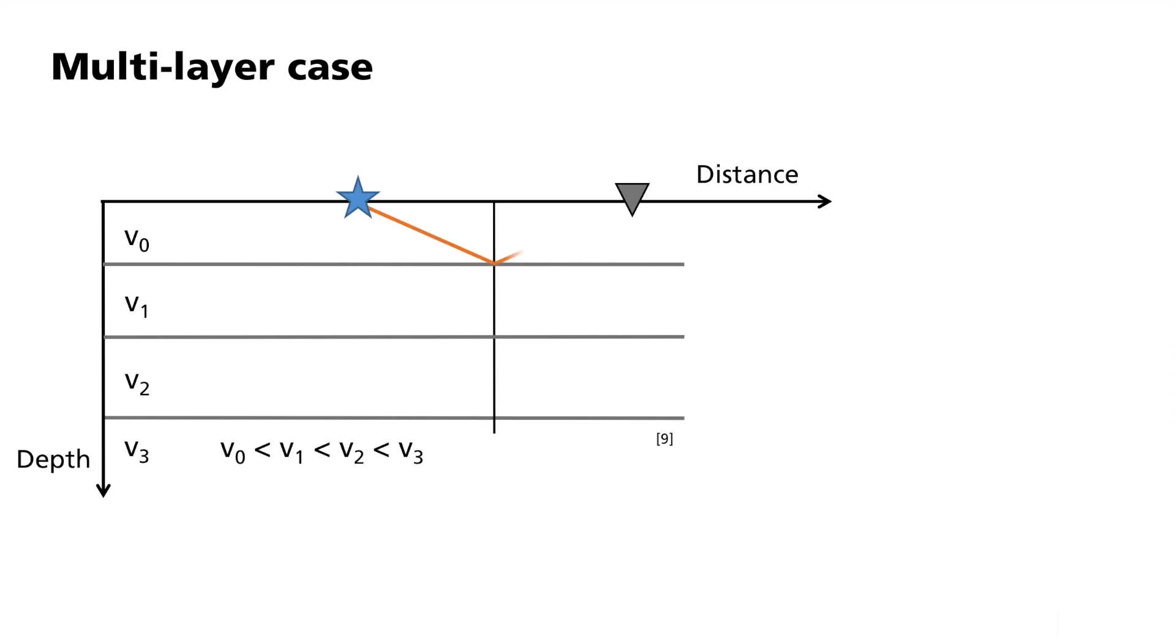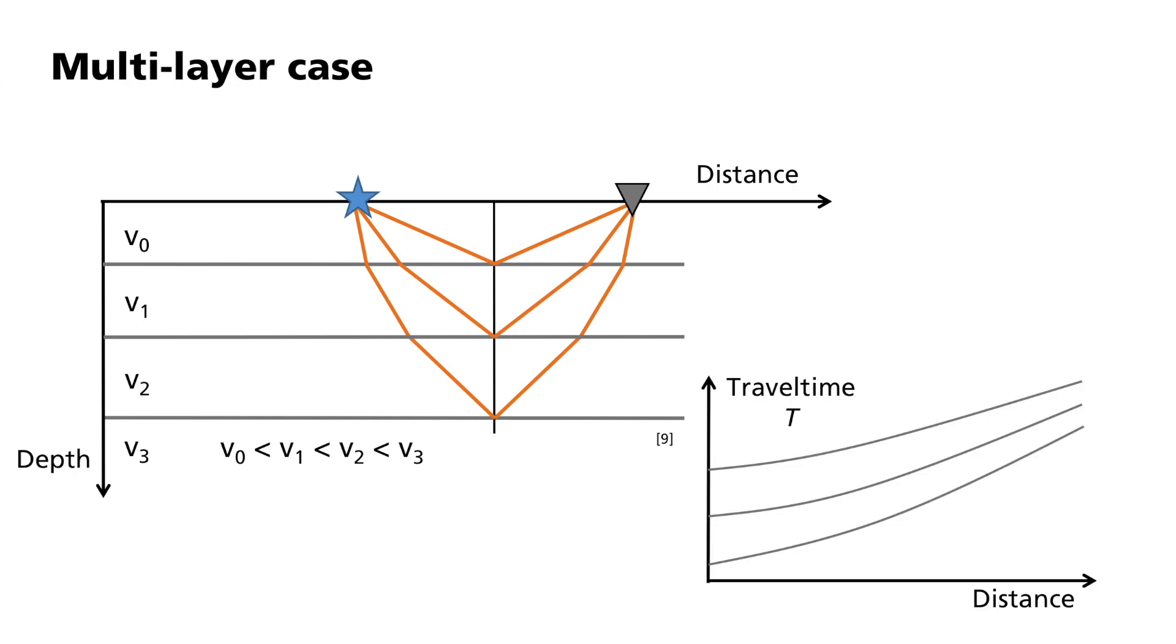The reflection at several layers leads to various hyperbolic travel time curves. Further calculations allow the velocities of the individual layers to be derived. In reality, of course, the subsurface is much more complex and a simple velocity analysis is only the first step.